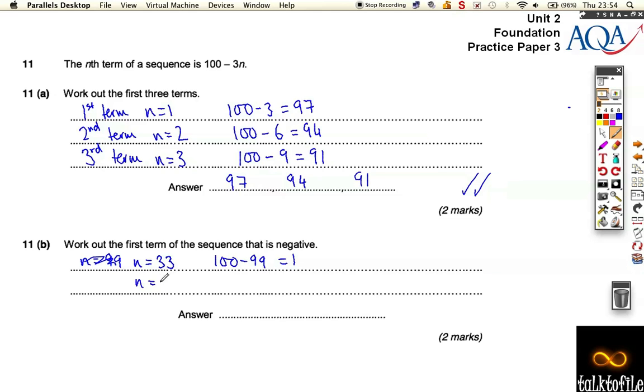If n is 34, well, you can see what's happening. It's going down by 3 each time. So if it goes down by 3 again, it's going to go down to minus 2. So 3 times 34 is 102. So taking that off, yeah, that's minus 2.